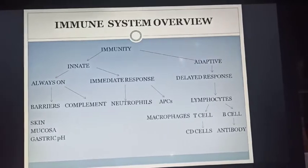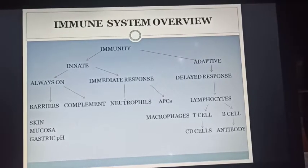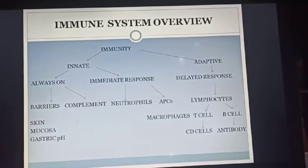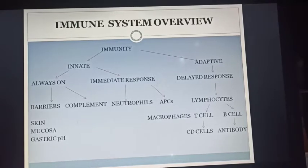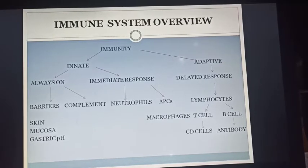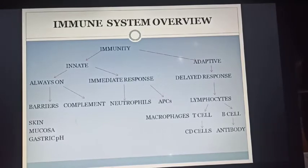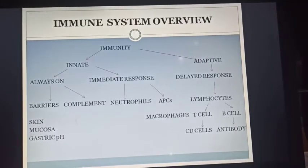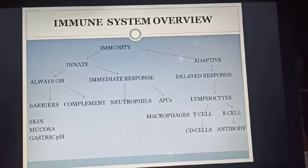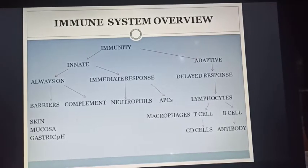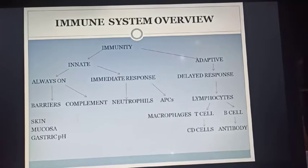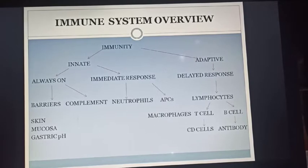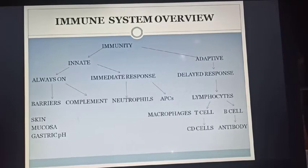Besides skin, we have epithelial cells — for example, epithelial cells in our gut and in the stomach. We also have mucosal layers; if you look at the eyes, there are mucosal layers. These things are there to protect us. In the stomach, the environment is very acidic, with a pH of 2 to 3. For first-line defense, we have skin, mucosa, gastric juice, epithelial cells, etc. For any infection to progress, these barriers need to be breached.